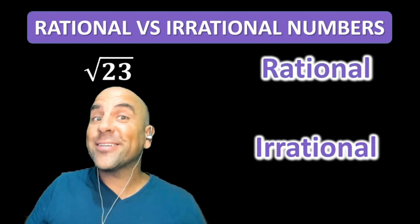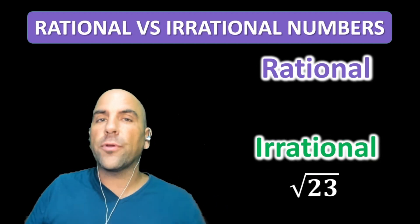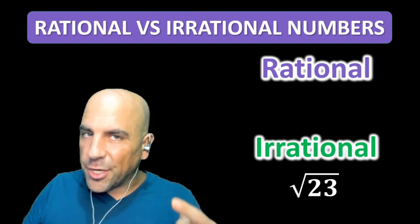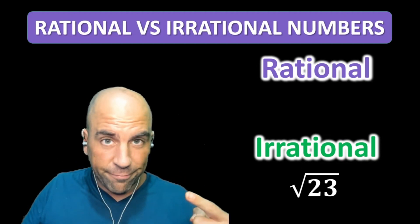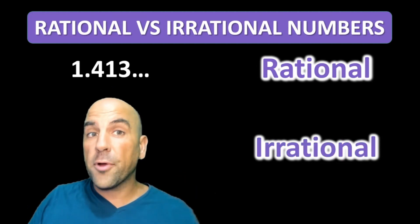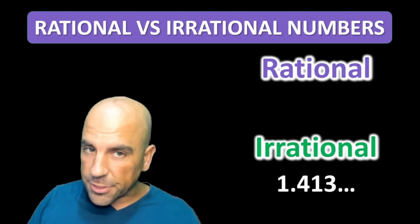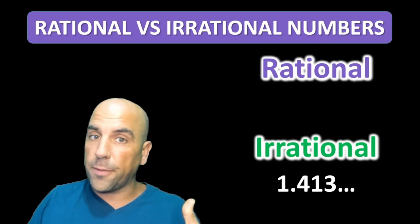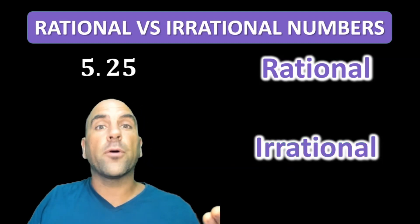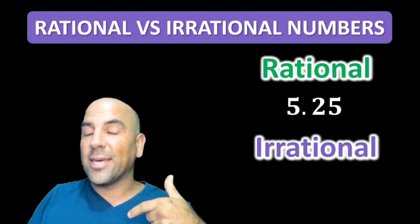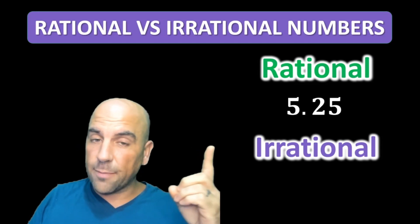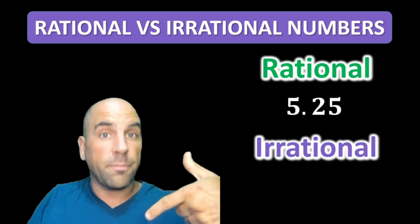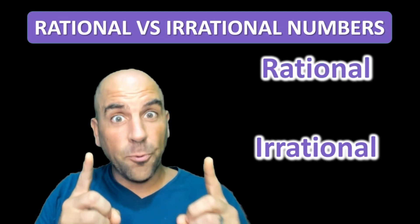Square root of 23? Irrational — the square root of 23 is a non-terminating decimal, but the numbers do not repeat. 1.413? Also irrational — you can see that it keeps going on, but the numbers do not repeat. 5.25? It's rational — this is the same as 5 and one fourth, which you can rewrite as an improper fraction, which is then a ratio. Nice work!